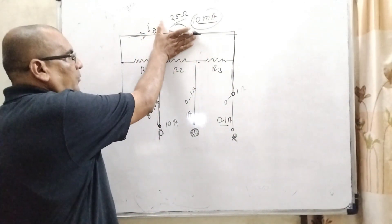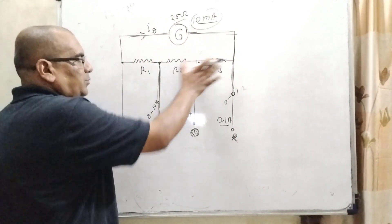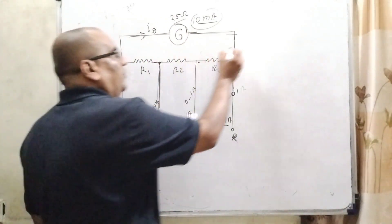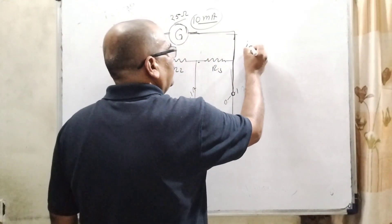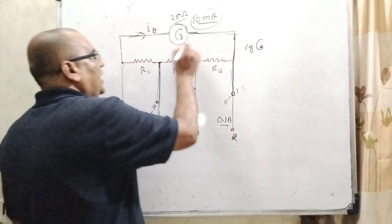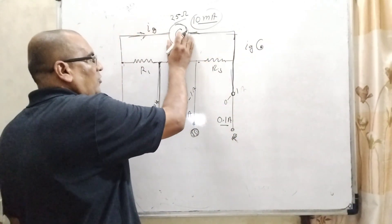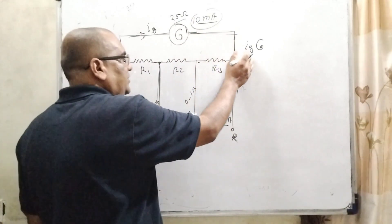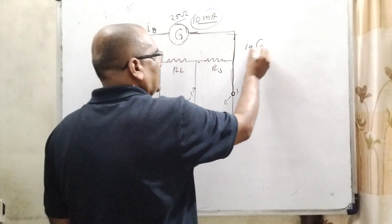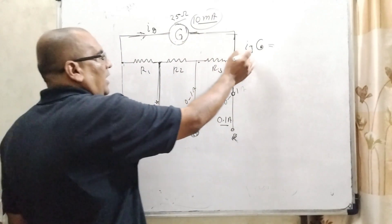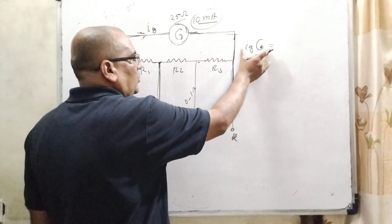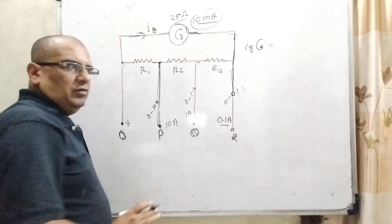Since the branches are in parallel, the potential difference across them is equal. Therefore, IG × G equals the potential difference across the shunt side. IG is the current passing through the galvanometer and G is the resistance of the galvanometer.